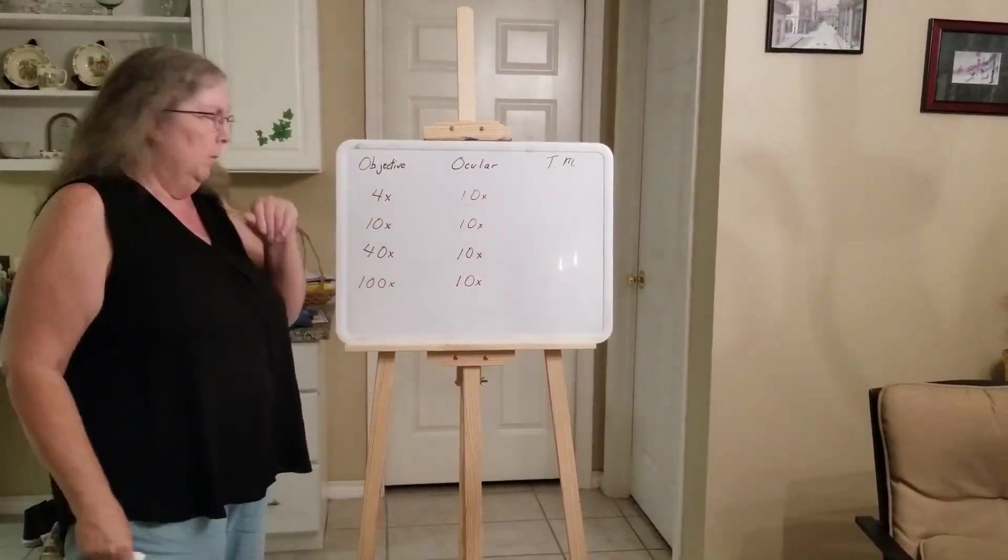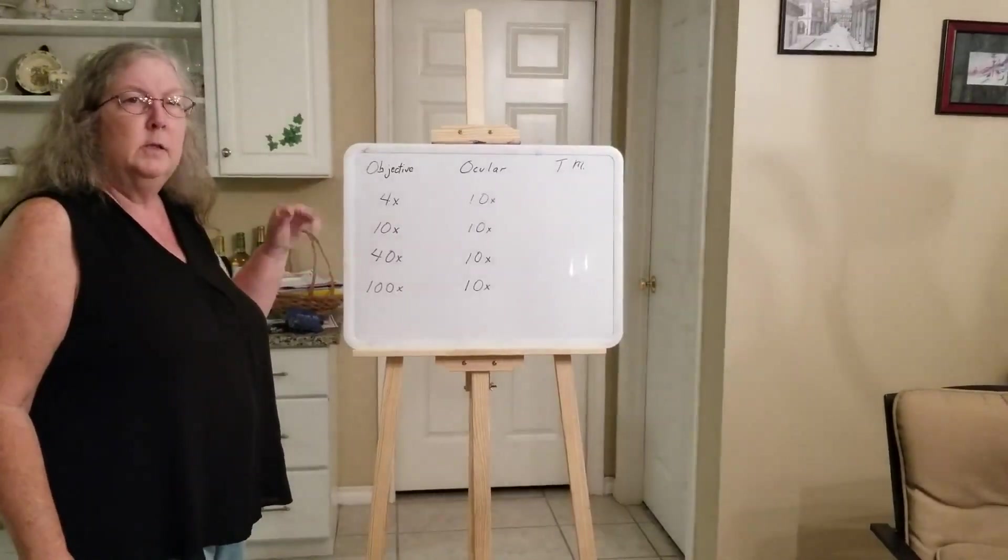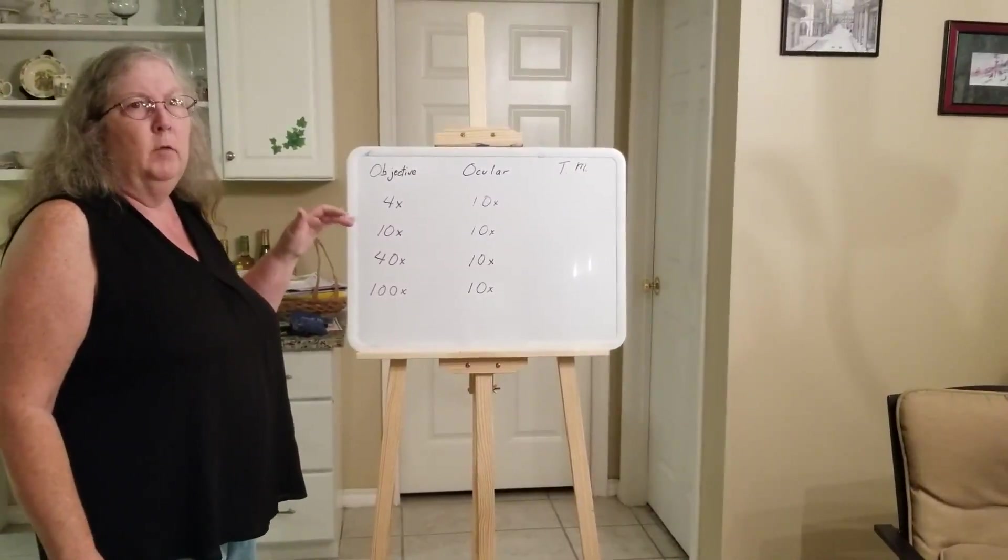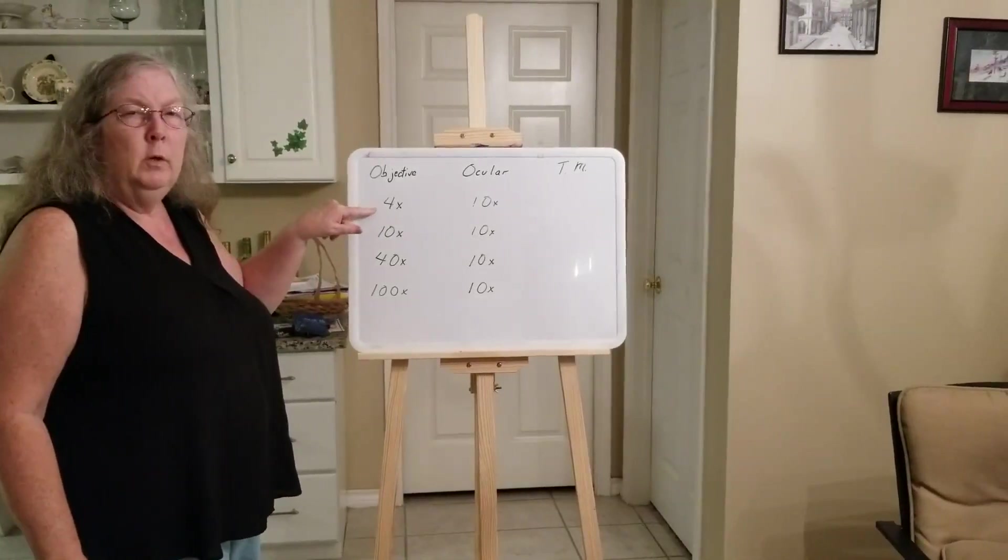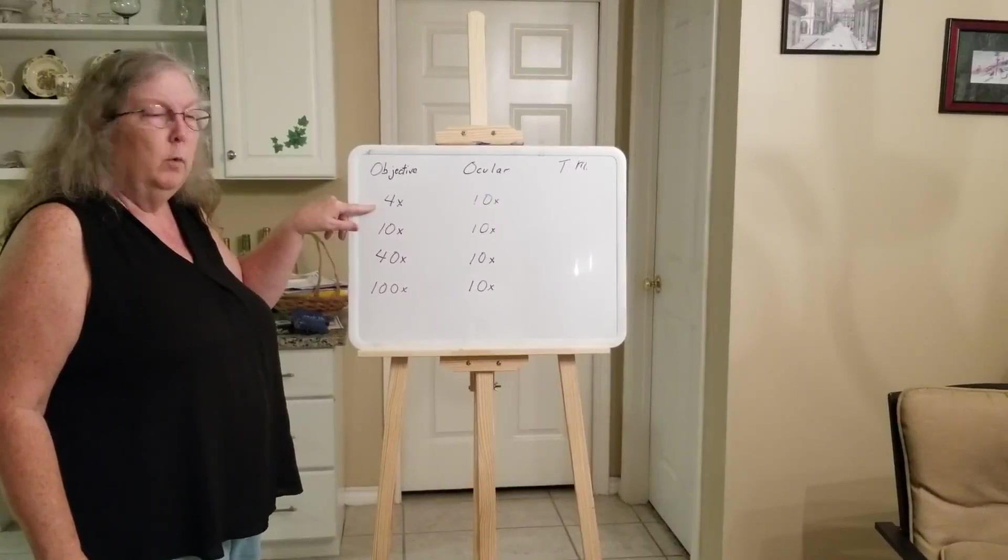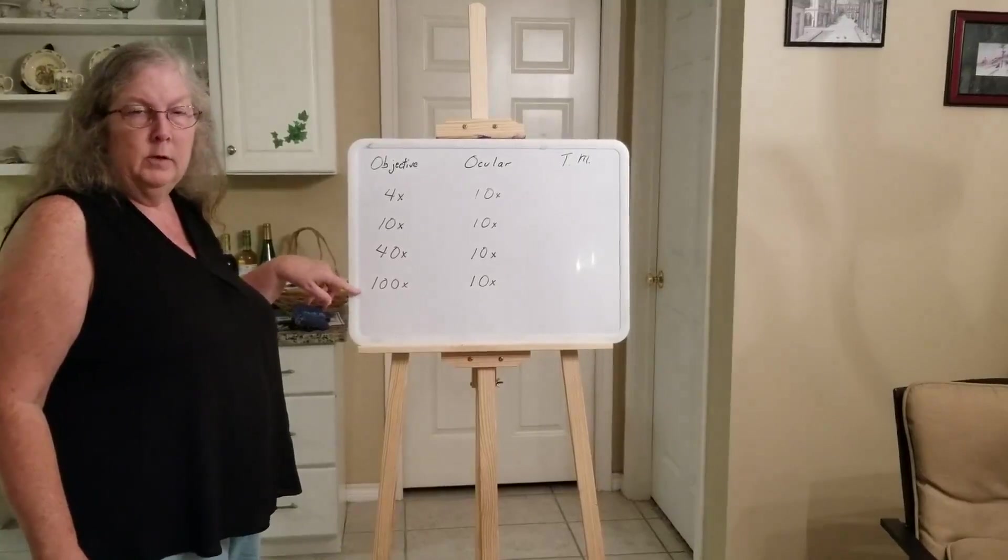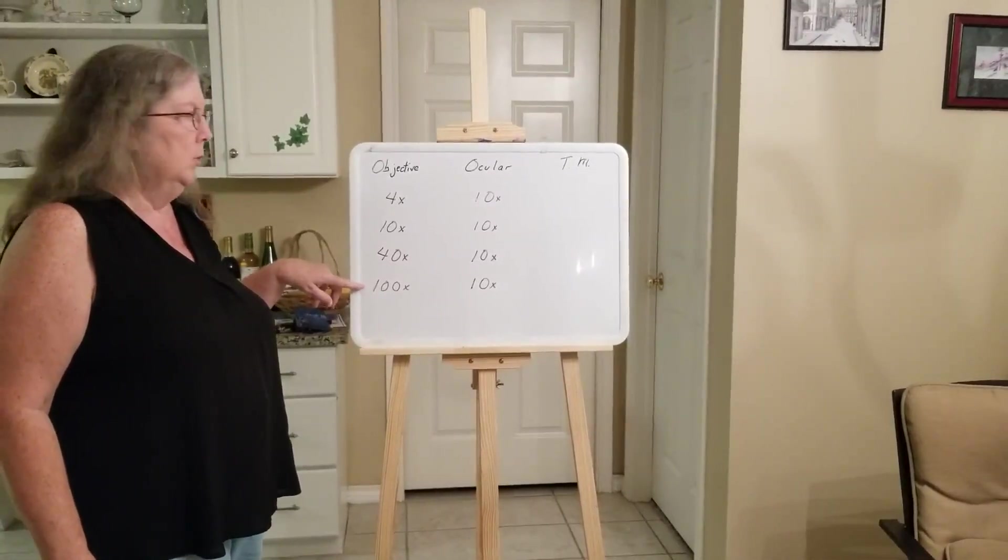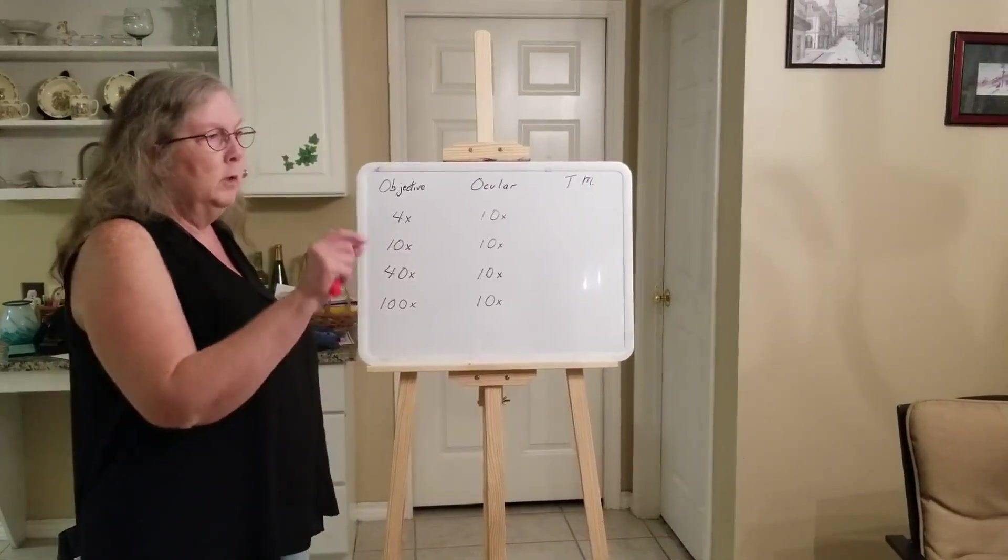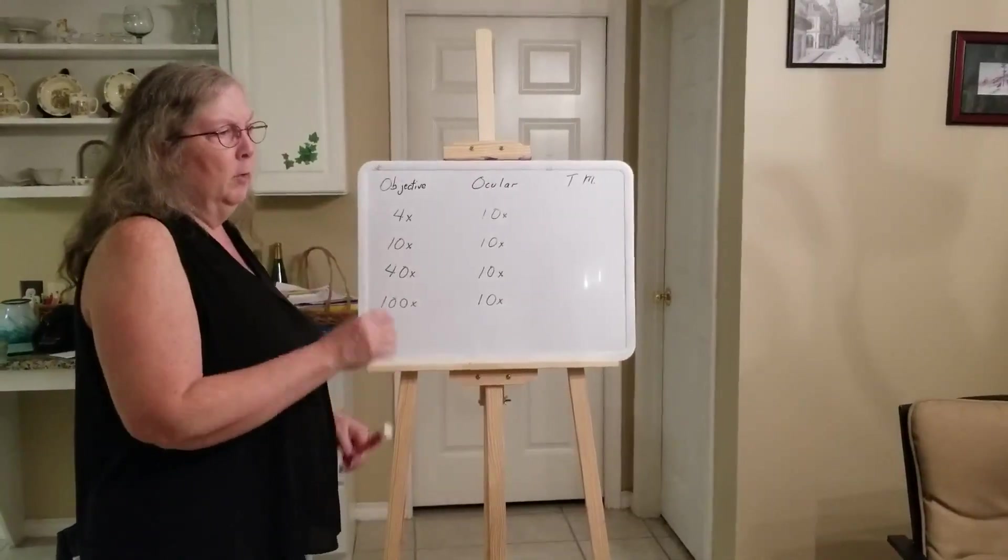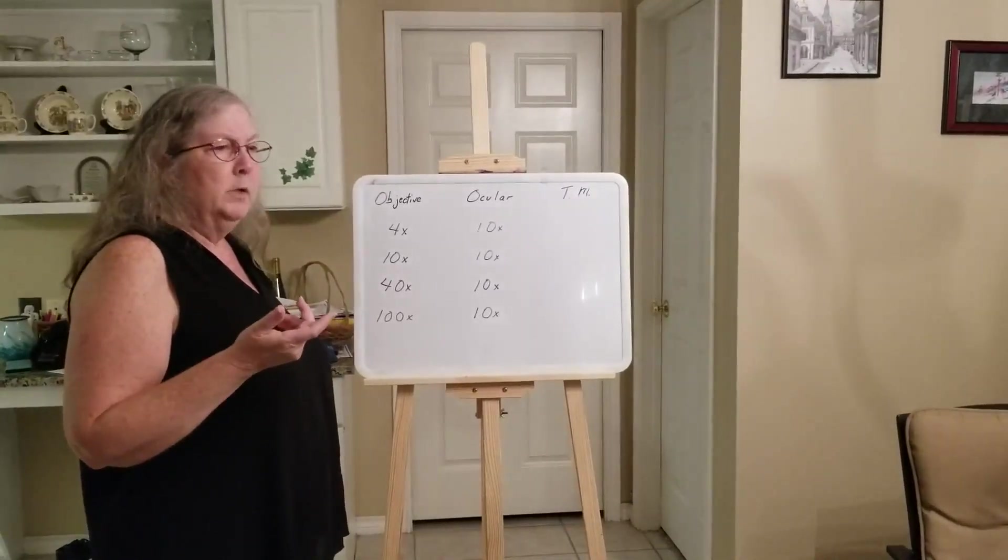On the microscope that we were just using, as I said, we had four objective lenses and this is a typical magnification that you would have on objective lenses where there are four. The shortest one that we started with was a 4x. Then there was a 10x, a 40x, and a 100x. The 100x was the oil immersion one. The ocular lens, that is a 10x. You can always look on them and there will be a number with the x after it. That's the magnification.